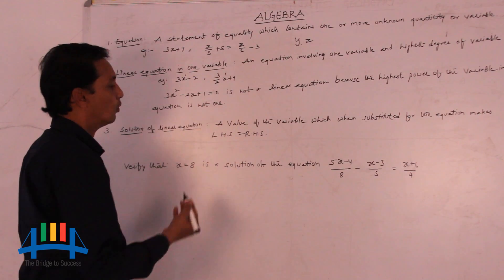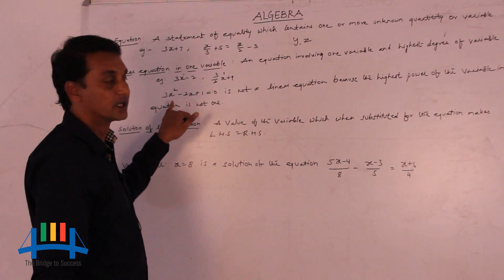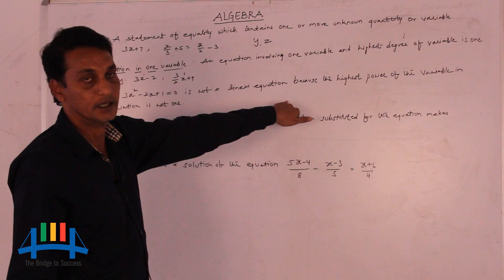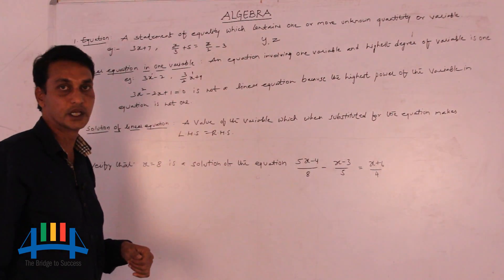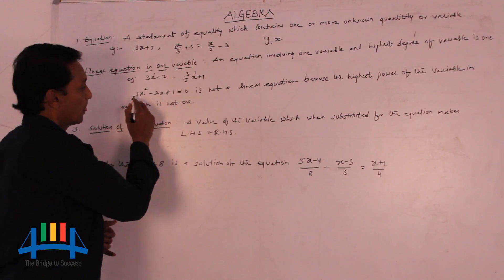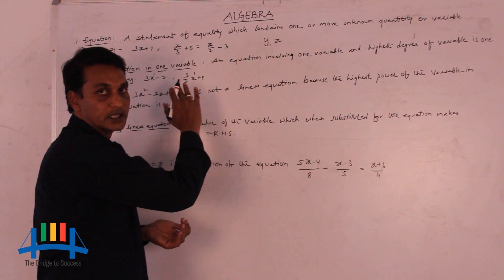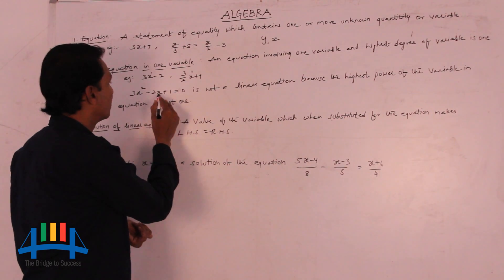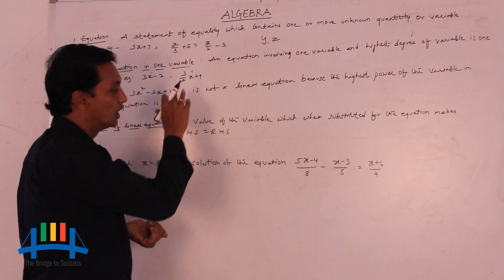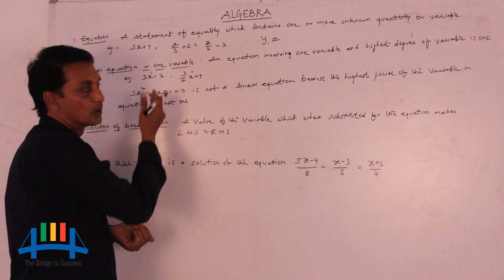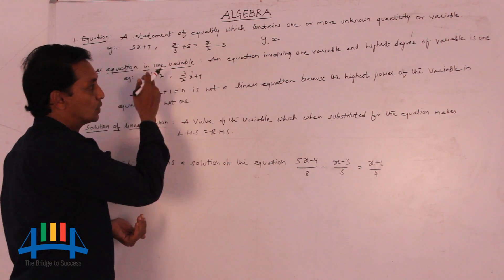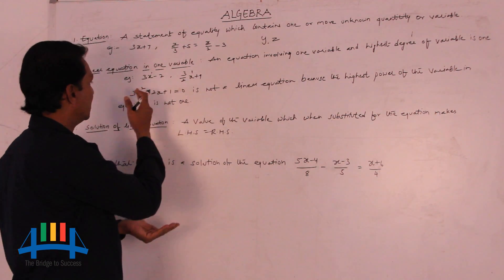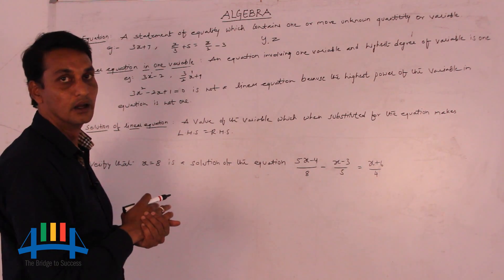Now let us see one more example: 3x squared minus 2x plus 1 equals 0. This is not a linear equation because the highest power of the variable is not 1. Here x is the variable. The power of x is equal to 2, and overall we take the highest power of x, which is 2. That is the degree. Here degree is 2, therefore it is not a linear equation.